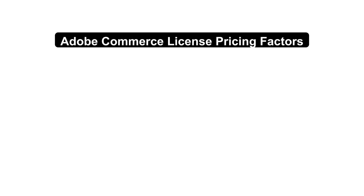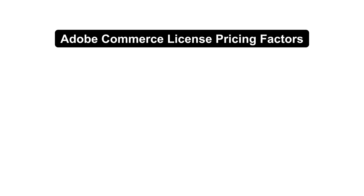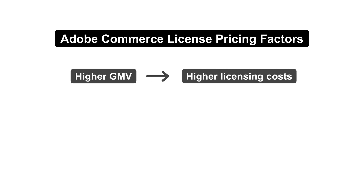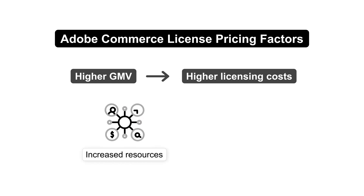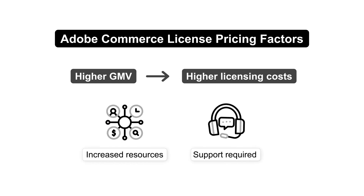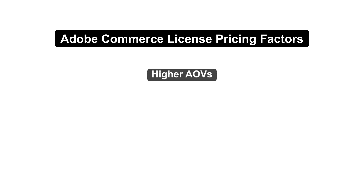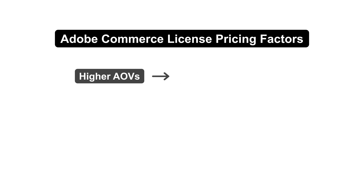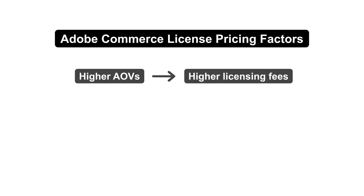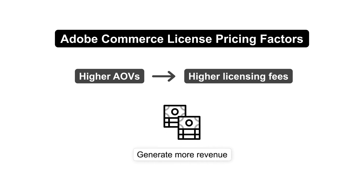First off, let's explore Adobe Commerce license pricing factors. Higher GMV means higher licensing costs due to the increased resources and support required. Higher AOVs incur higher licensing fees as they generally generate more revenue per transaction.